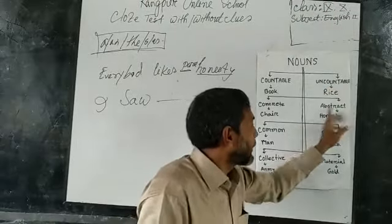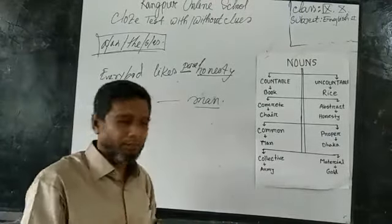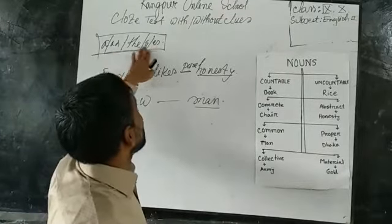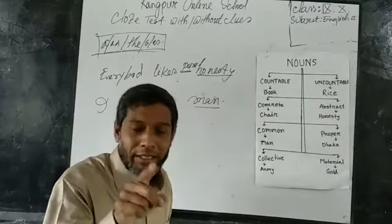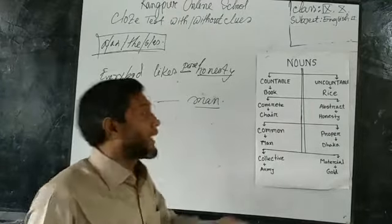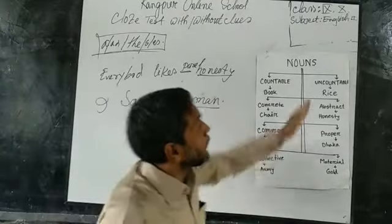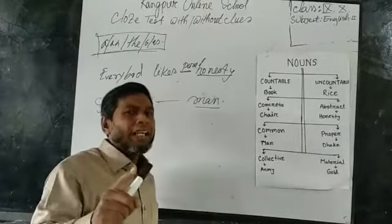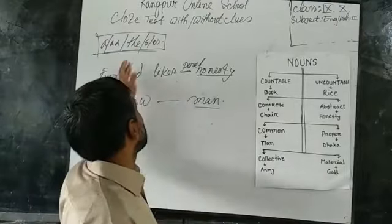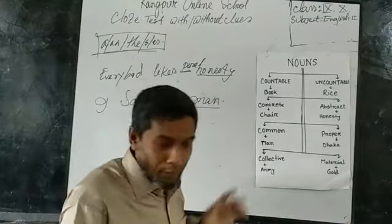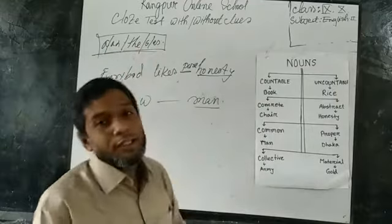These four nouns — uncountable, abstract, proper, and material — when I will use them in a sentence, they cannot take 'a', 'an', 'the', 's', or 'es' before them. So it will be my technique: when I go to any context to fill in the blanks, I can understand which type of noun to use. In a word, you should remember: if the first four nouns are used in a sentence, you must use 'a', 'an', 'the', or some adjective before them. But when the second four nouns are used, they cannot take those determiners before them.